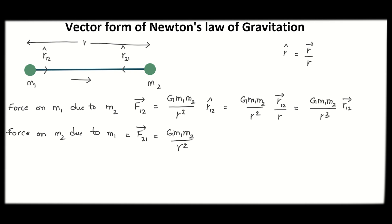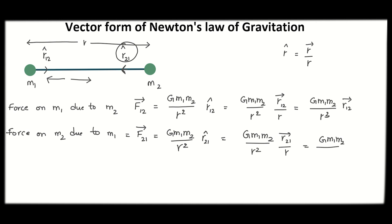They exert equal forces on each other. Now the force on m2 is directed towards m1. The unit vector in the direction of m1 is r21 cap. Using complete vector notation, the force is Gm1 m2 by r squared times r21 cap. Since r21 cap equals r21 bar divided by r, finally we get Gm1 m2 by r cubed times r21 bar.